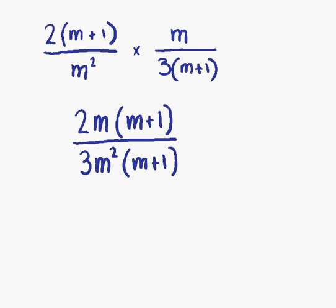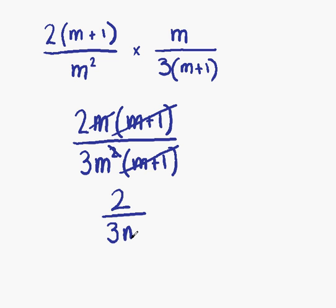Can we simplify? This time we can. We have (m plus 1) on the top, and this can be cancelled with (m plus 1) on the bottom. We also have m on the top and m squared — which is m times m — on the bottom, so the m on top cancels with one of the m's from the bottom. That leaves us with 2 on the top and 3m on the bottom. Can we simplify further? No, so 2 over 3m is our final answer.